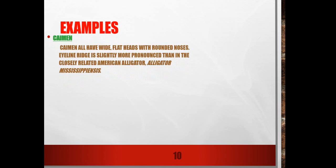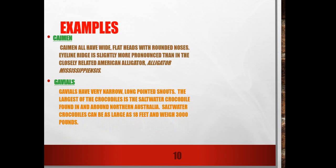The second example is the Caiman. Caimans have wide flat heads with rounded noses and an eye ridge slightly more pronounced than in the closely related American Alligator. The next example is the Gharial, which has a very narrow, long, pointed snout. The largest of the crocodilians is the Saltwater Crocodile.